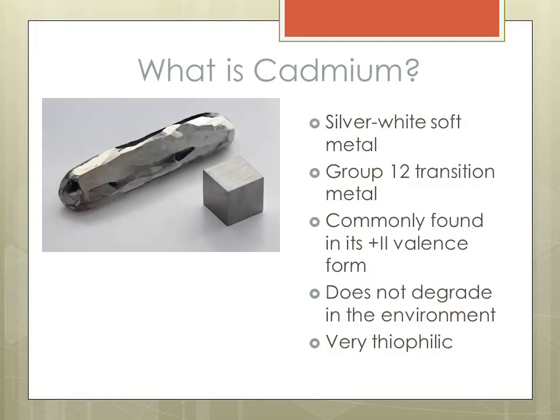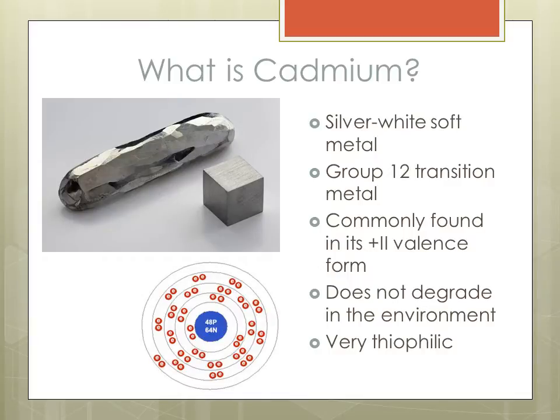Cadmium is a silver-white soft metal often found associated with zinc, lead, and copper ores in the earth's crust. Cadmium is a transition metal found in group 12 of the periodic table of elements and is commonly found in its plus 2 valence state in the environment. This form of cadmium prevents it from degrading in the environment, allowing it to accumulate over time.